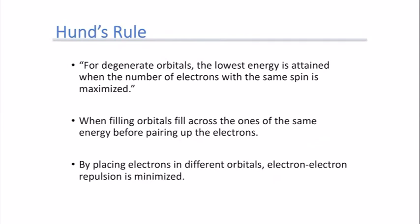The last rule before we look at electron diagrams is Hund's rule. Hund's rule says that for degenerate orbitals, the lowest energy is obtained when the maximum number of electrons have the same spin. So when filling up orbitals, we fill across all orbitals of the same energy before we pair electrons. Placing electrons in different orbitals minimizes electron-electron repulsion, making the configuration more stable.